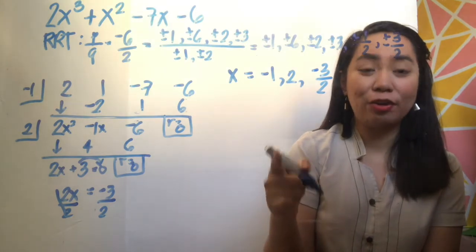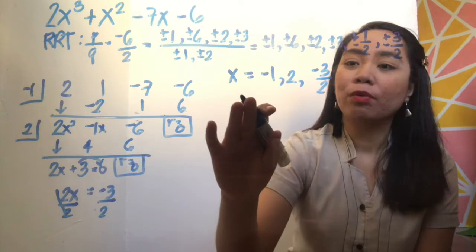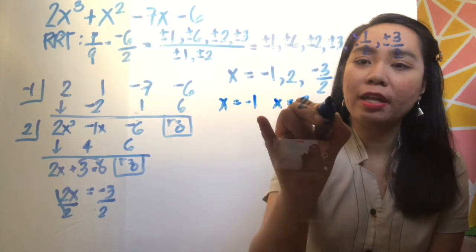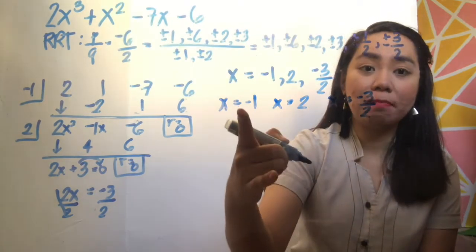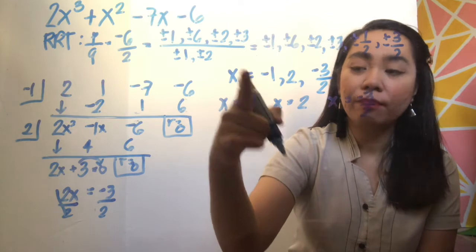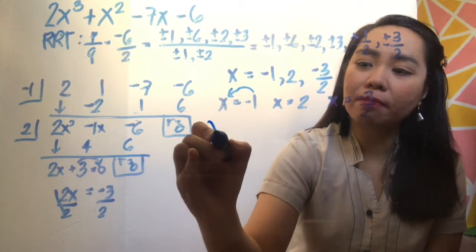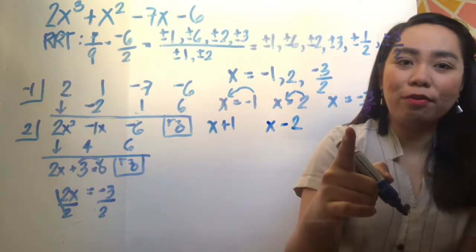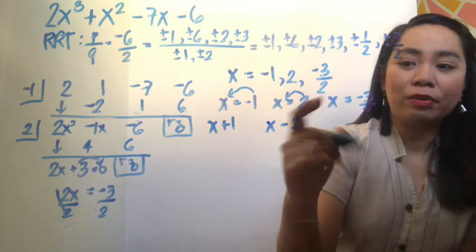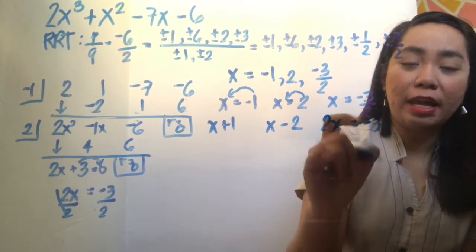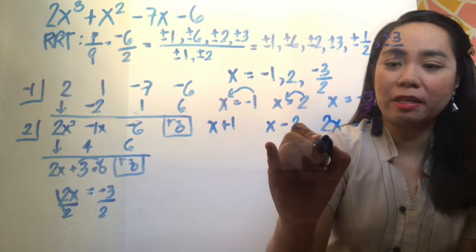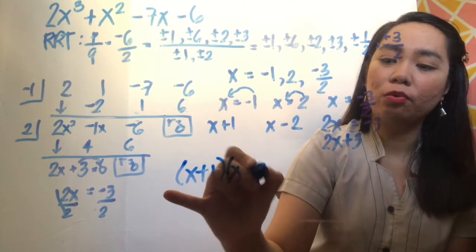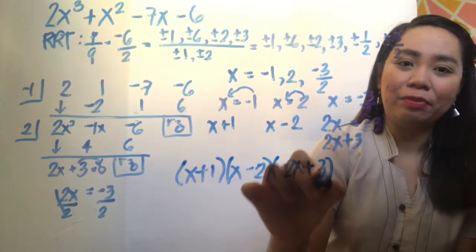The roots are x equals negative 1, x equals 2, and x equals negative three-halves. Now we write the factored form. Move back the constants beside x: x equals negative 1 becomes x plus 1, x equals 2 becomes x minus 2, and for the fraction, 2x equals negative 3 becomes 2x plus 3. Therefore the factored form is (x + 1)(x − 2)(2x + 3).